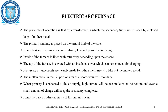The main principle of operation is that of a transformer, since we have a primary and secondary winding. The secondary turns are replaced by a closed loop of molten metal. The primary winding is placed on the central limb of the core; therefore, the leakage reactance is comparatively very low and the power factor will be very high. Inside the furnace there is a lining of refractory material, which can vary depending on the charge. The top of the furnace is covered with an insulated cover that can be removed for charging. Tilting arrangements are made to take out the molten metal safely.